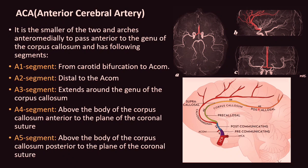A5 is the post-callosal segment which lies above the body of the corpus callosum posterior to the plane of the coronal suture. These are the branches shown in the MR angiogram.